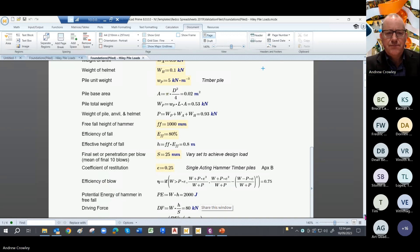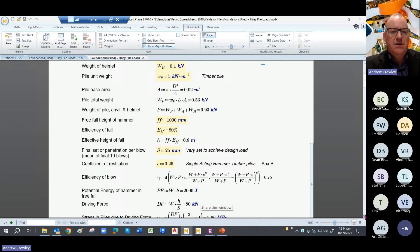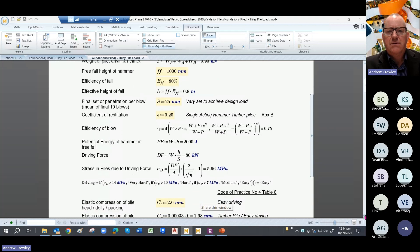So you put those all together to get the P value, and then you find out the free fall height of the hammer. In this case it's a meter. We add the efficiency of the fall. Now that can often be taken from the piling rig if that's available. If not, a simple estimate is used as 80%. We've put in the final set here, which is S. Now an S of 25 millimeters is a fairly high set, and I've deliberately done that to spit out the word easy for easy driving.